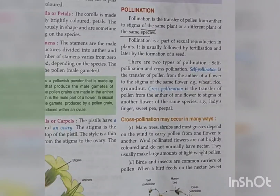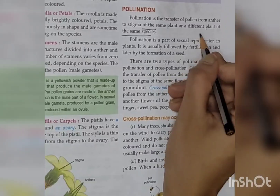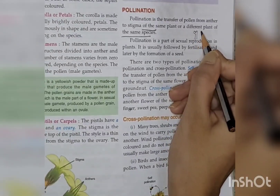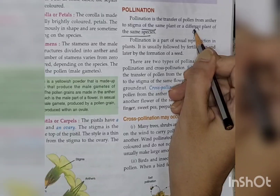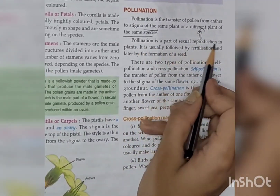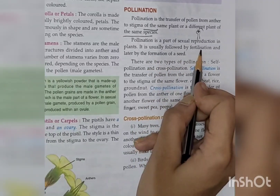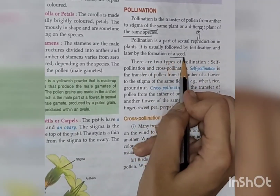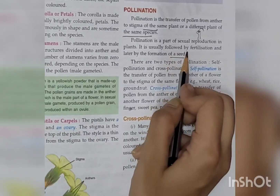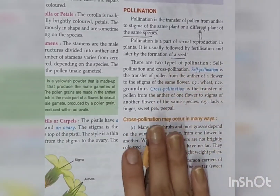Pollination is usually followed by fertilization. The pollen lands on the stigma and goes inside, leading to fertilization. Pollination is a part of sexual reproduction in plants and is usually followed by fertilization and later by the formation of a seed. We will study fertilization in detail later.